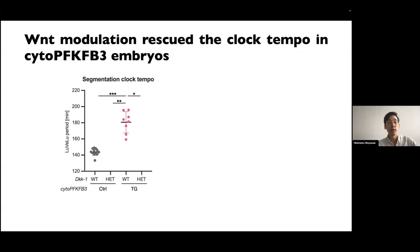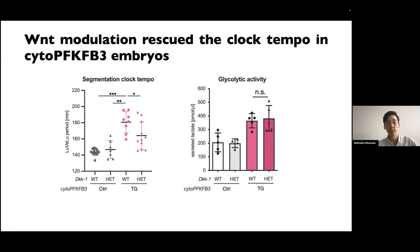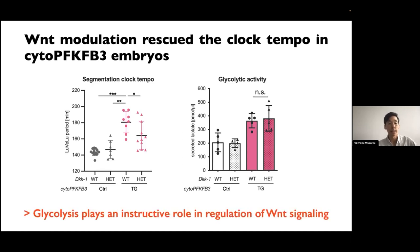As presented, overexpression of cyto-PFKB3 led to a slower clock, but excitingly, deleting one allele of DKK1 can rescue the clock tempo. Importantly, I confirmed that DKK1 deletion does not affect glycolytic activity. This data suggests DKK1 deletion can rescue the clock tempo without changing the metabolic phenotype, fitting nicely with the idea that the role of glycolysis is instructive rather than permissive.